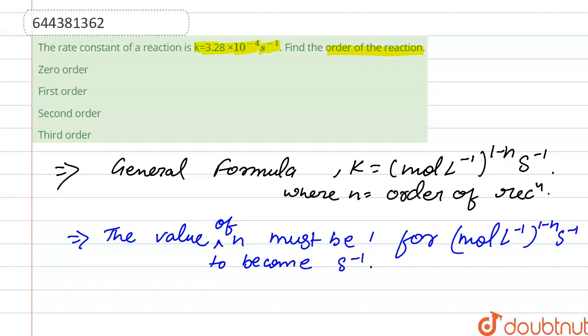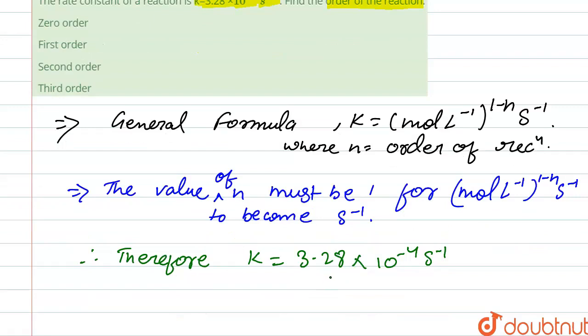Second inverse. Therefore, k equals 3.28 times 10 to the power minus 4 second inverse is first order reaction, is first order.